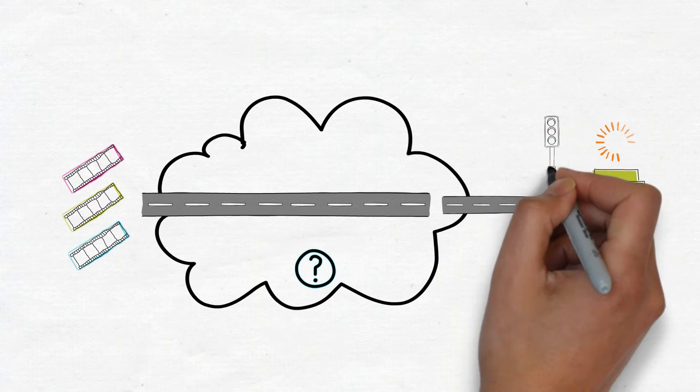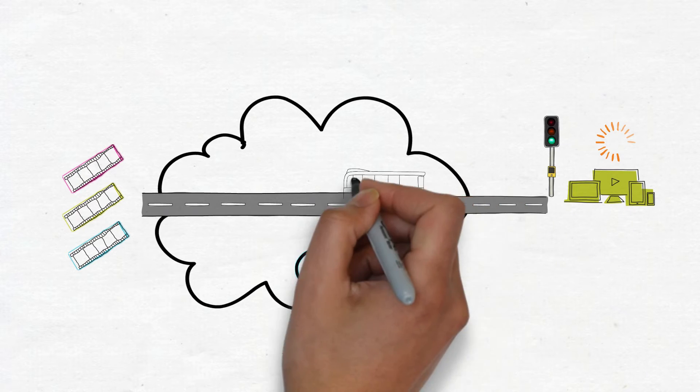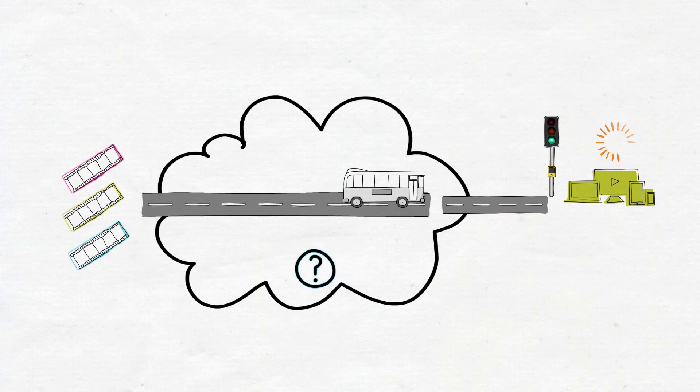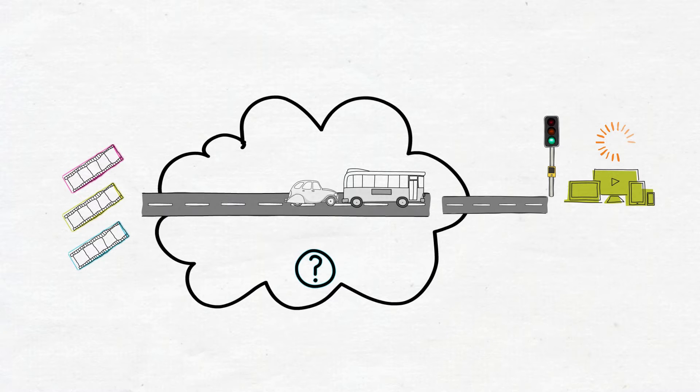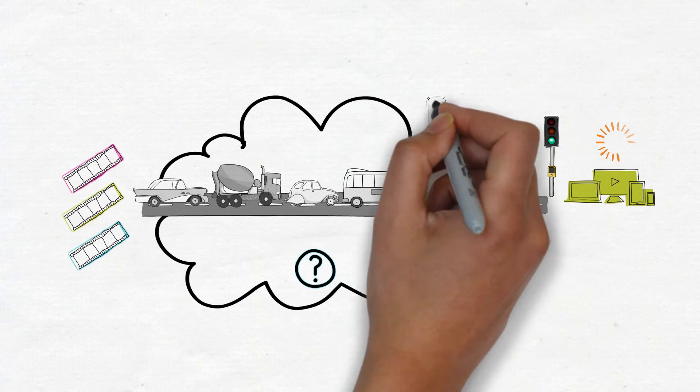And a bit like driving, your local road might be clear of traffic, but the long distance highway you need to reach your final destination might be really congested. And in this case, what's congesting it is probably other people trying to watch TV at the same time as you.